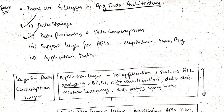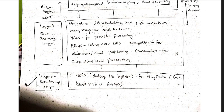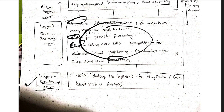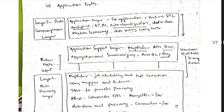The four layers are: data storage, data processing, application support layer, and application task (data consumption). To remember: you need data first (data storage), then you process it using MapReduce, YARN, HBase etc. (data processing), then support it (application support layer), and finally use it for application or data consumption (last layer).